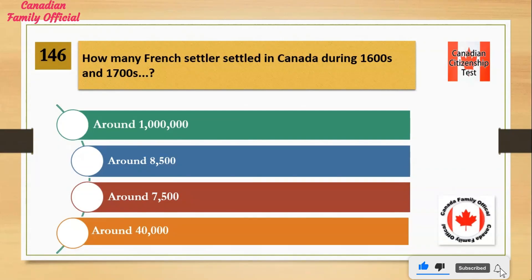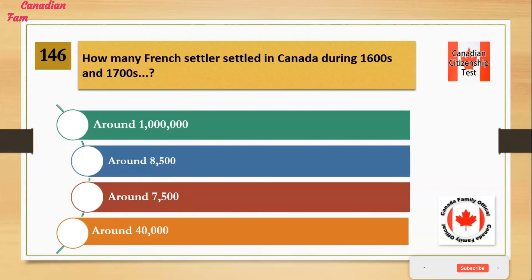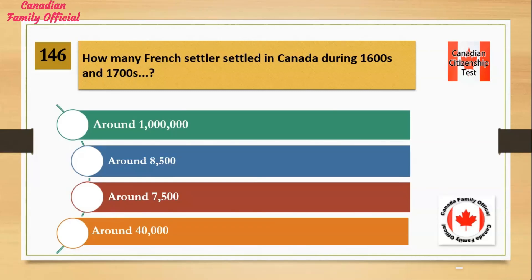How many French settlers settled in Canada during the 1600s and 1700s? Number 1: Around 1,000,000. Number 2: Around 8,500. Number 3: Around 7,500. Number 4: Around 40,000. And the answer is around 8,500.